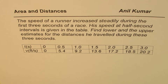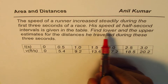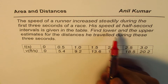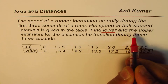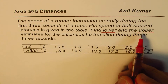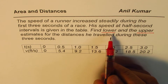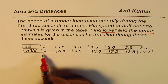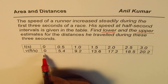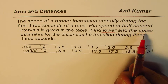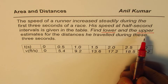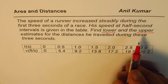We are estimating the distance — both lower and upper. It is like finding the area under a curve, where for the lower estimate we'll use the left side of the rectangle, and for the upper estimate we'll use the right side of the rectangle. That is an important concept to understand.